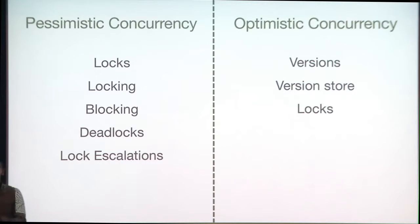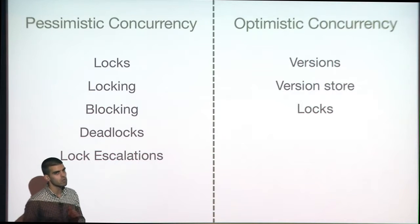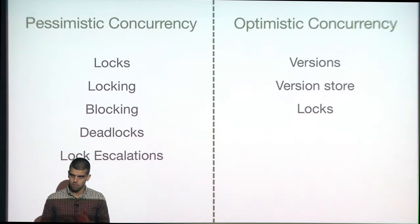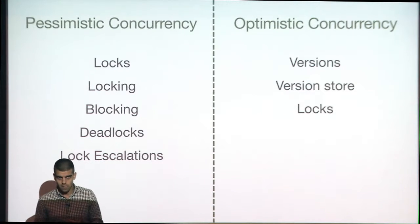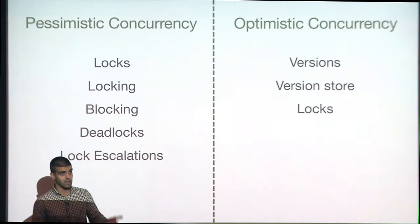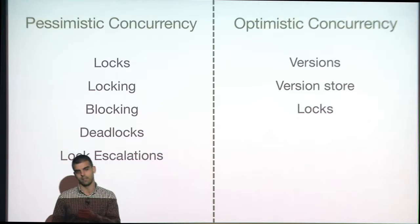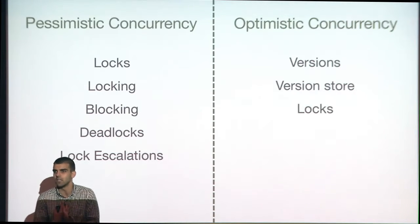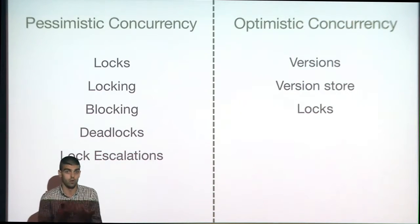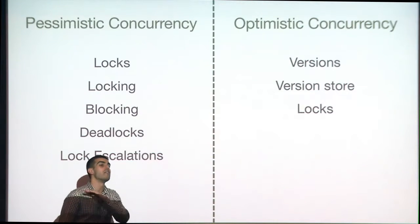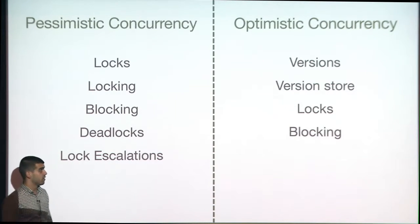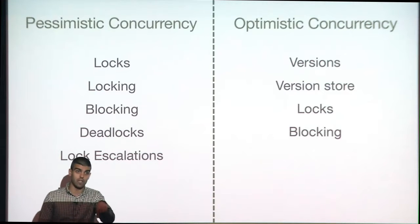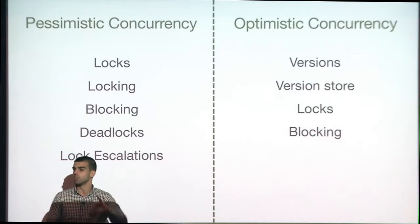That doesn't change the fact that in optimistic concurrency we also have locks. No matter what you read on the web, the writers — the guys modifying data — always take locks, regardless of whether you're in optimistic concurrency. And that causes blocking in optimistic concurrency too, where everyone thinks 'oh, there's no more blocking' — that's not the case.